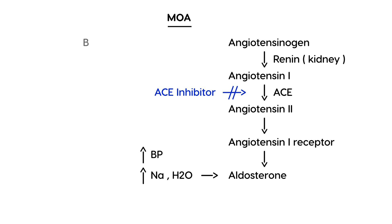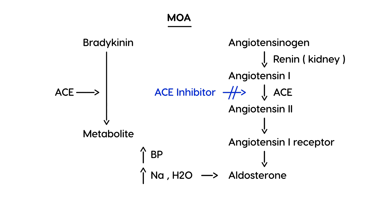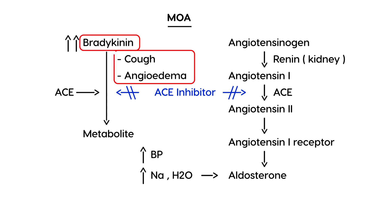There's a separate cascade on the other side that's also affected. You have a pathway involving a molecule known as bradykinin, and normally it breaks down into a metabolite with the help of angiotensin converting enzyme. But when an ACE inhibitor is used, that blocks this step also. When that step is blocked, bradykinin accumulates, and it's the accumulation of bradykinin that causes the cough and the angioedema.